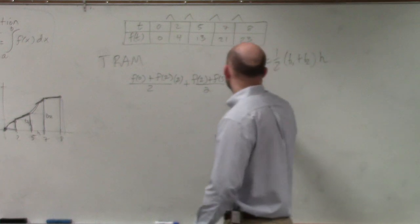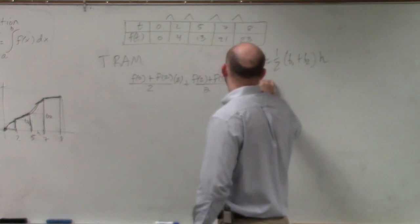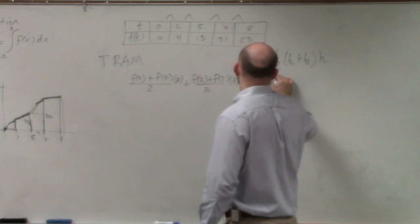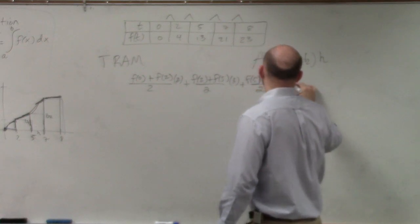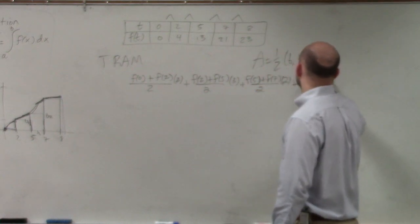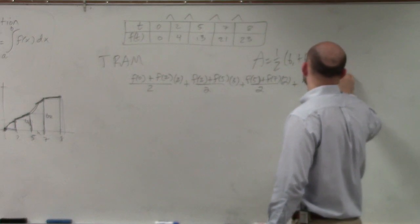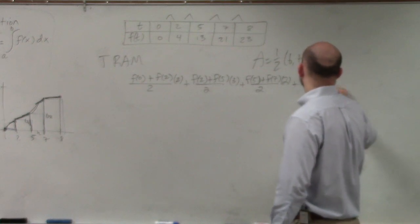Then we're going to go from 5 to 7. f of 5 plus f of 7 divided by 2. The distance between those two is 2. And then we're going to do f of 7 plus f of 8 divided by 2 times 1.